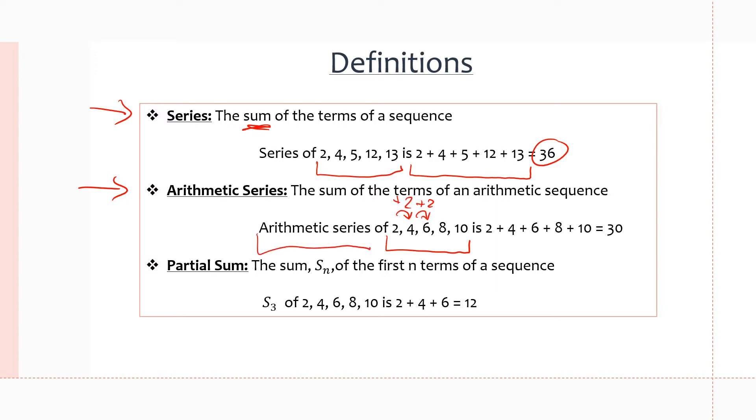So the arithmetic series of this arithmetic sequence is simply the sum of all the terms. So 2 plus 4 plus 6 plus 8 plus 10, which will give us 30.